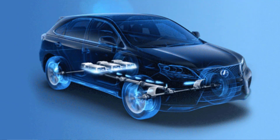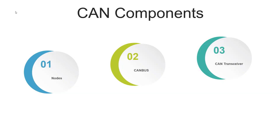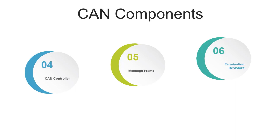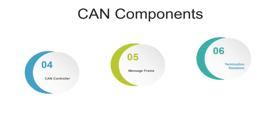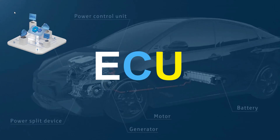The CAN bus consists of several components that work together to enable communication between various devices on the network. These components include nodes, CAN bus, CAN transceiver, CAN controller, message frames, termination resistors, and diagnostic and configuration tools. A node refers to the devices or components connected on a CAN network, such as ECUs (Electronic Control Units), sensors, actuators, and displays.